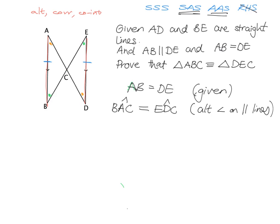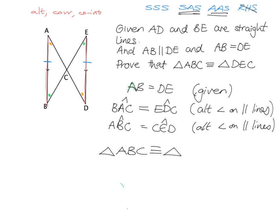Then I can talk about my other pair of angles being equal: angle ABC is equal to angle CED. Let me just check I've named those angles correctly — yes, ABC equals CED. And again the reason is alternate angles on parallel lines. At the end I can conclude that triangle ABC is congruent to triangle DEC, by angle-angle-side. It really is nice to make sure you write it in the correct order: A, B, C congruent to D, E, C.